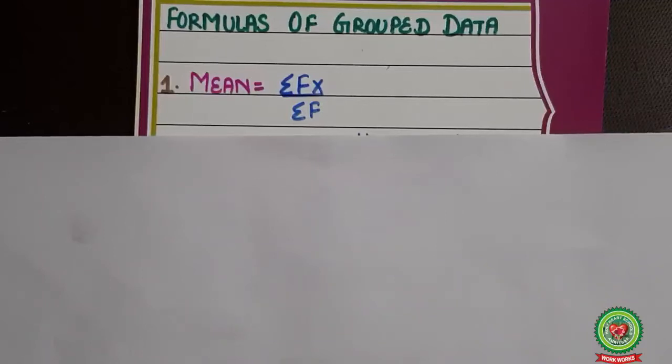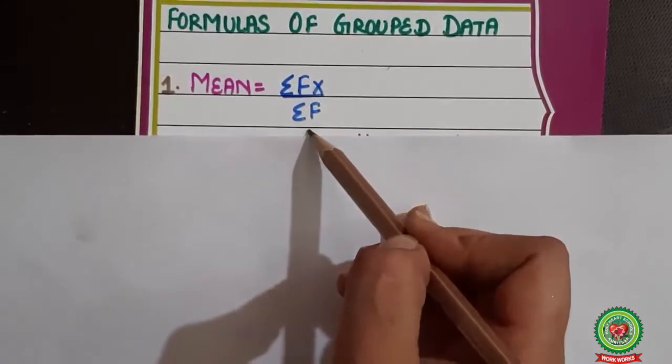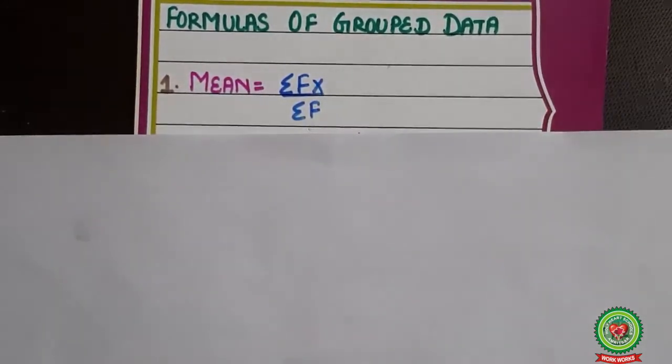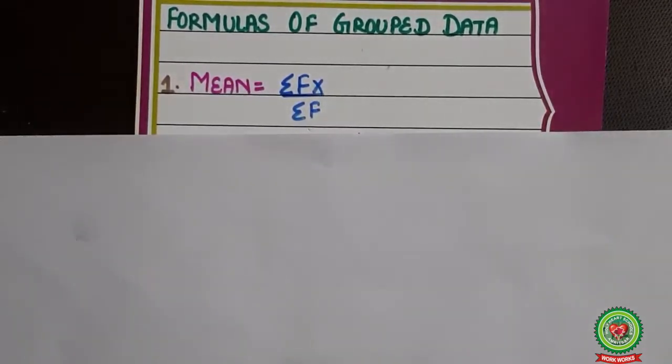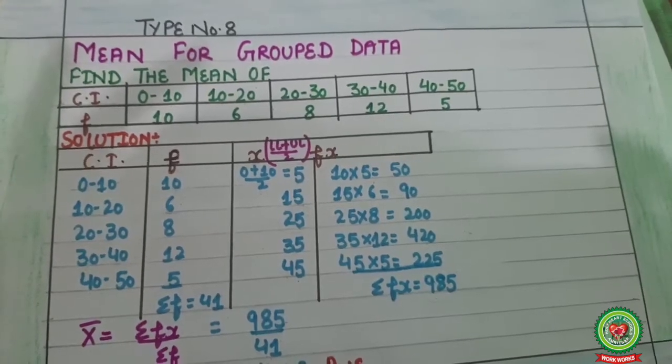Before starting with the sum, let us have a look at the formula. What is the formula? Formula of mean is equals to summation fx upon summation f. Now we'll start with the question. Students, this method to find mean is known as direct method.